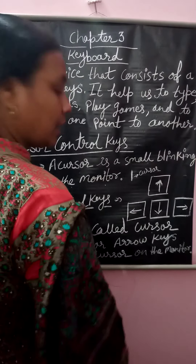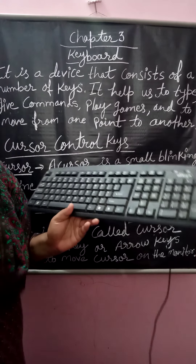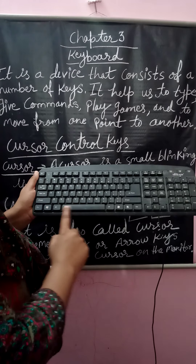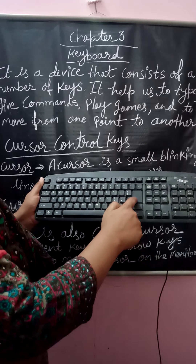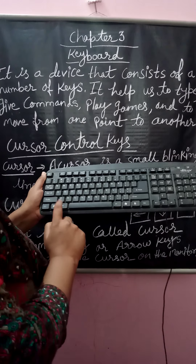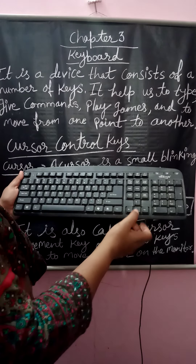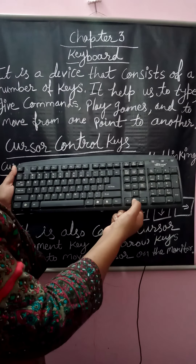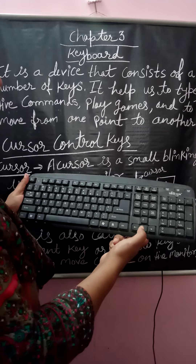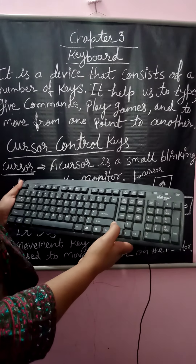Now I am showing you where these keys are on a keyboard. This is your keyboard. You have a space bar — the longest key on the keyboard. We also have an enter key, two shift keys, two control keys, an Alt key, and the cursor control keys — four keys: upward, downward, right, and left. These four arrow keys are used for moving the cursor, which is the blinking line.